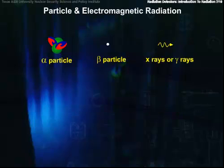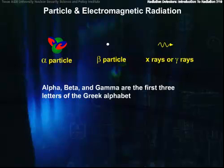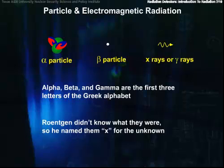On a historical note, the scientists who discovered radiation in the early days were not particularly inventive. Alpha, beta, and gamma are the first three letters of the Greek alphabet, and x-rays were so named because Rontgen didn't know what they were, so he named them X for the unknown.